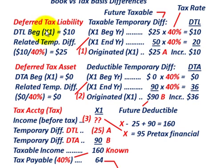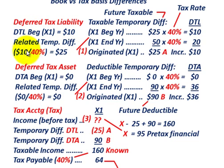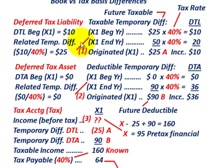We take the beginning of the year, year X1 — everything is in thousands of dollars. We have $10,000 here, so our related temporary difference for this deferred tax liability of $10,000 would be $10,000 divided by the tax rate of 40%. That results in a taxable temporary difference of $25,000 at the beginning of the year.